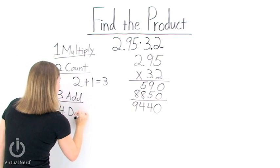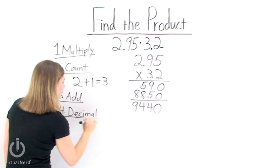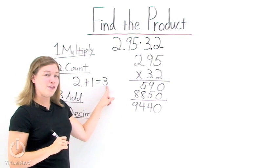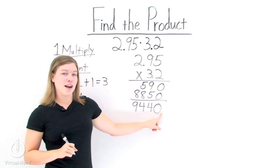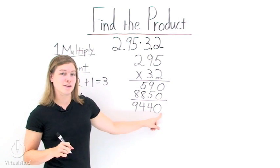Step number 4 is to actually place our decimal into our answer. So take the number 3 that we found before, start at the very right-hand side of our answer, and then count that many units to the left.